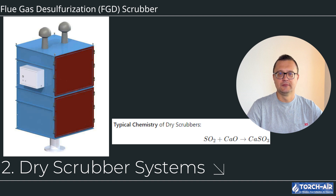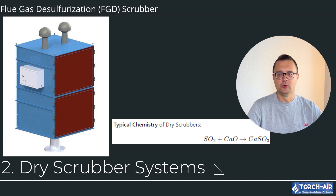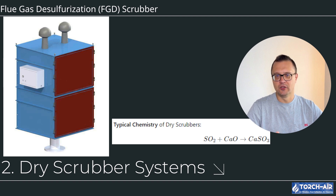Dry Scrubber Systems: Dry scrubbers are used where water consumption is a concern, or space constraints make wet scrubbers impractical. Like wet systems, the flue gas enters the dry scrubber through a gas inlet. A powdered sorbent, typically lime (CaO) or sodium bicarbonate (NaHCO3), is injected into the gas stream. The dry sorbent reacts with SO2 to form a solid byproduct, such as calcium sulfite.